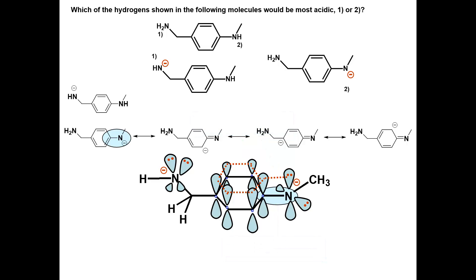If there is an sp3 carbon between the negatively charged atom and the pi bond, no resonance can occur, since all of the sp3 carbon electrons are involved in sigma bonds and are not free to resonate.